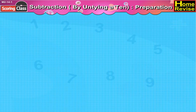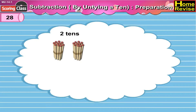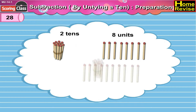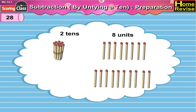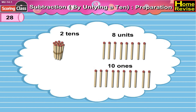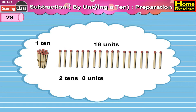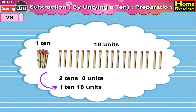Now children, twenty-eight means two tens, eight units. You know that if we untie one ten, we get ten ones. So then it would be one ten, eighteen units. So two tens, eight units means one ten, eighteen units.